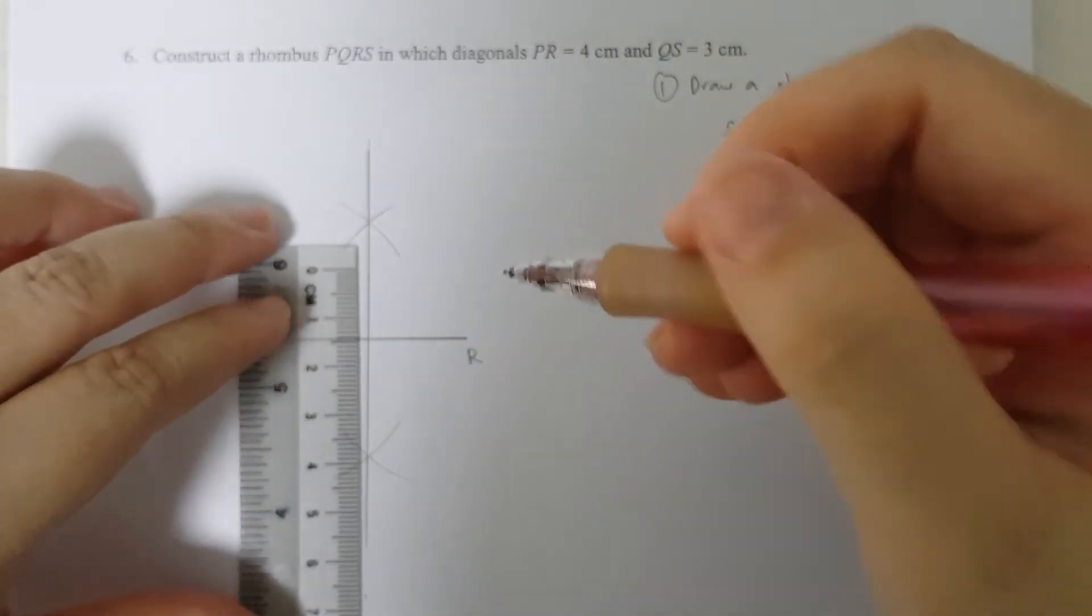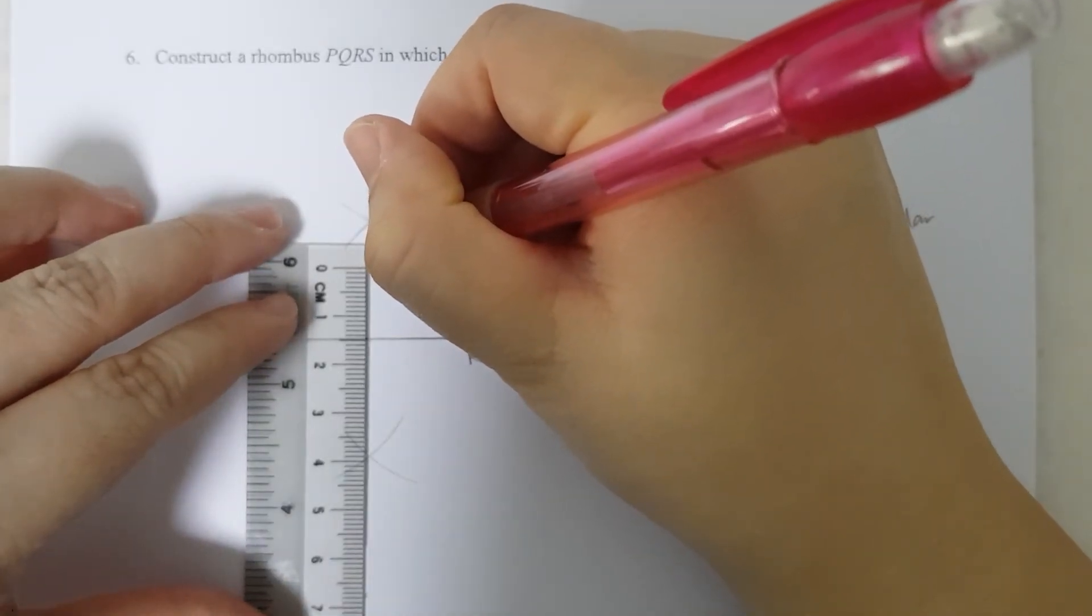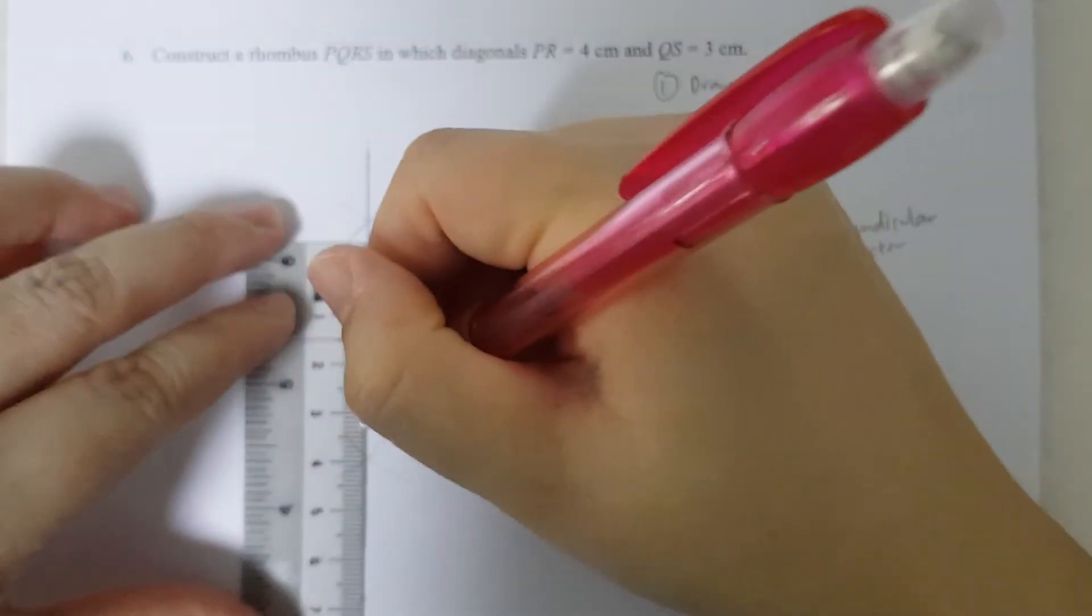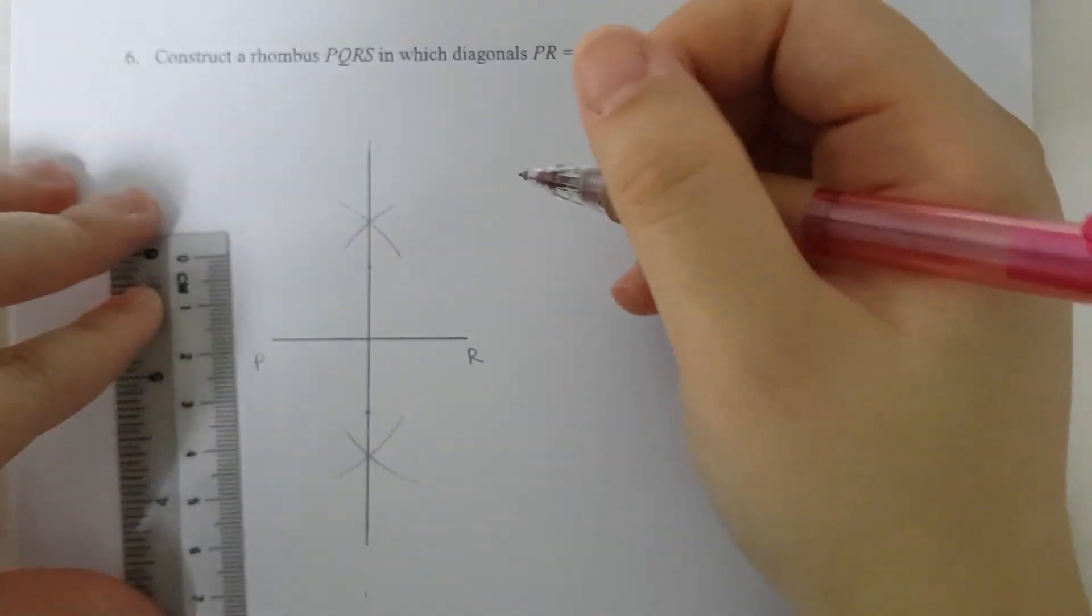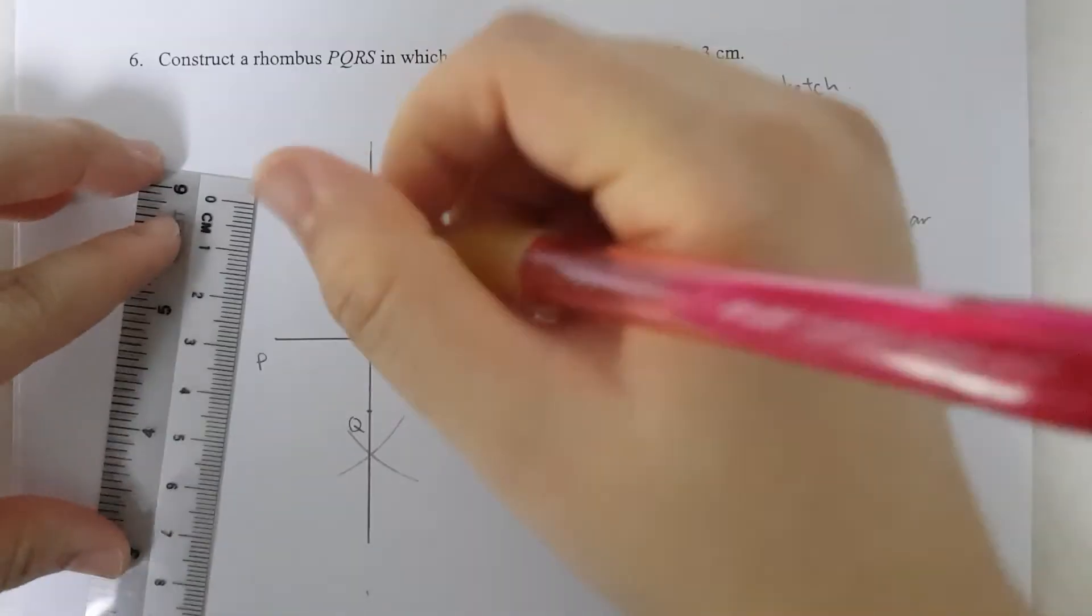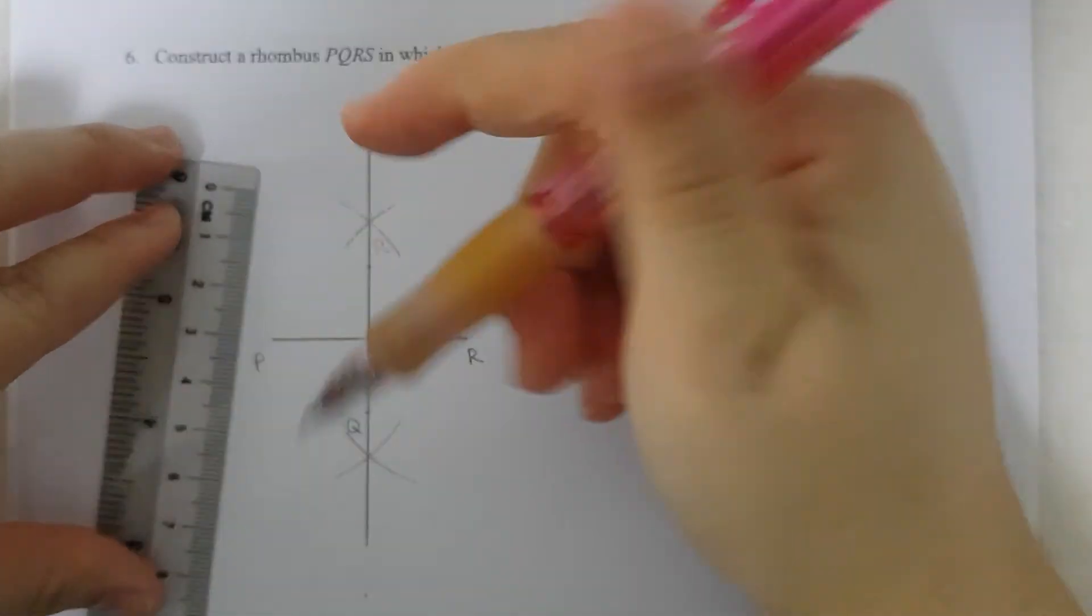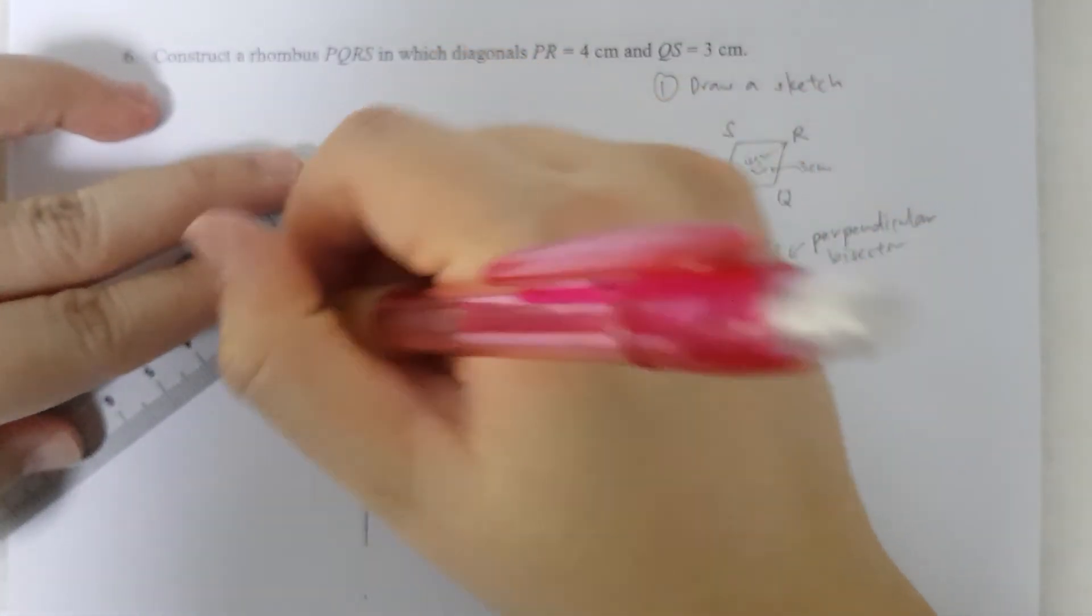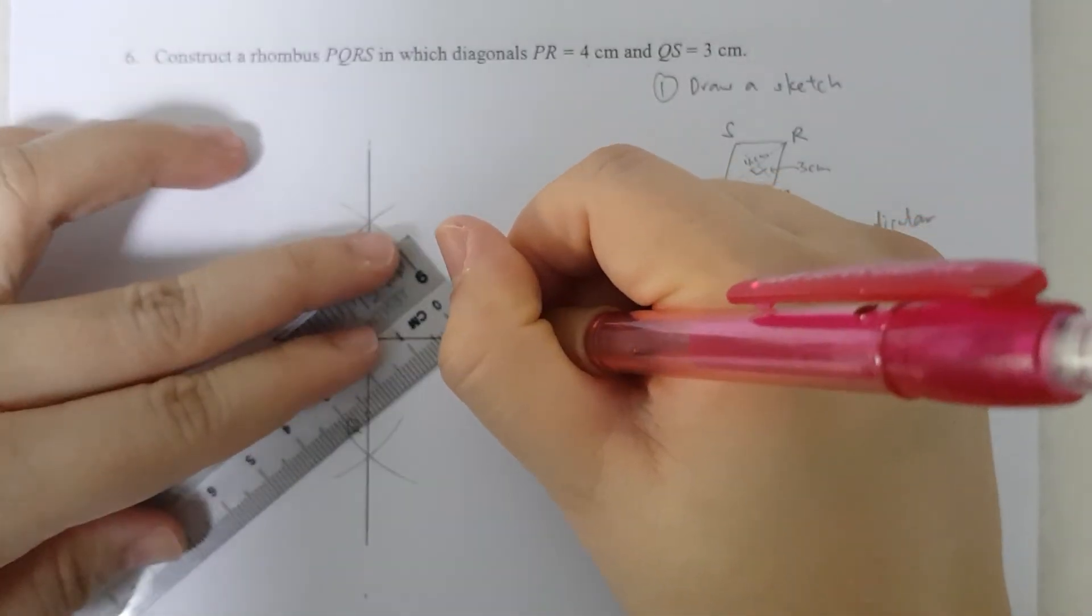So I'll mark out the points. I have P, Q, R, S. Then I'm going to join the sides of the rhombus.